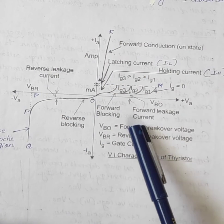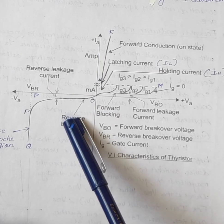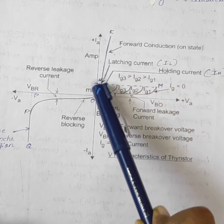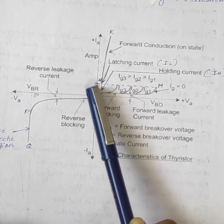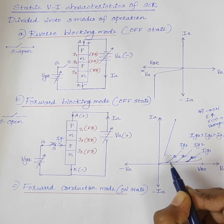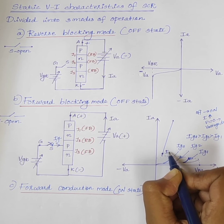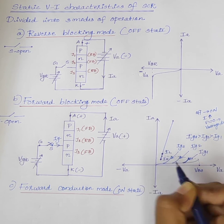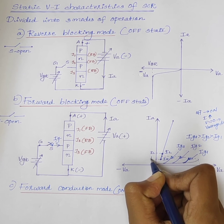The complete VI characteristics of SCR is shown here. This portion acts as reverse blocking mode. This portion from O to M acts as forward blocking mode. And this portion acts as forward conduction mode. We can also mark two currents on the curve: latching current IL and holding current IH.